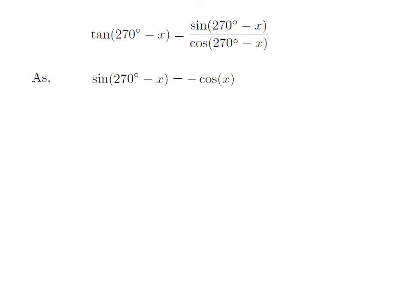We know the trigonometric identity: sine of 270 degrees minus x is equal to minus cosine of x. The proof of this identity has been explained in the video appearing in the upper right corner, and the URL has been mentioned in the description section as well.